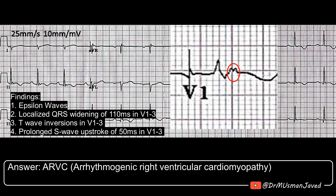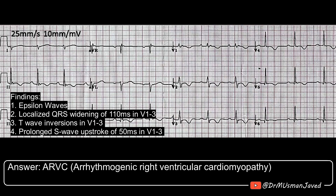This is a magnified view to show the epsilon wave. There is localized QRS widening from V1 to V3, along with T wave inversions. The S wave upstroke is delayed, with a long S wave upstroke of more than 50 ms in these leads.